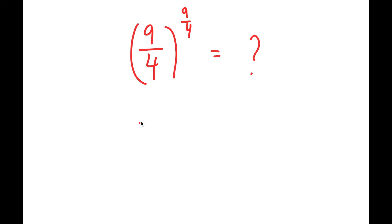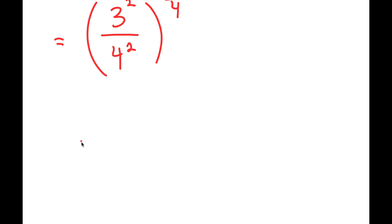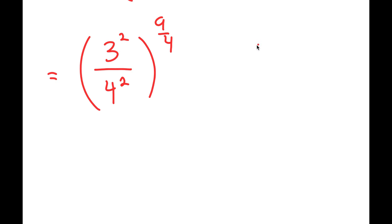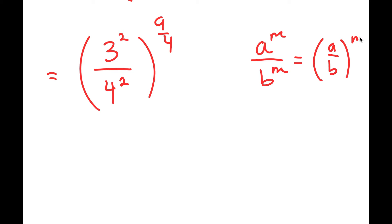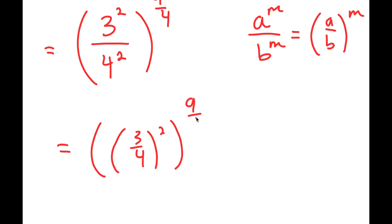So I have 9 and 4, and I'm going to rewrite this as 3 squared over 4 squared, to the power of 9 over 4. The reason I did this is because if I have something in the form a to the power of m over b to the power of m, this equals a over b to the power of m. So this turns into 3 over 4 to the power of 2, and I have this to the power of 9 over 4.